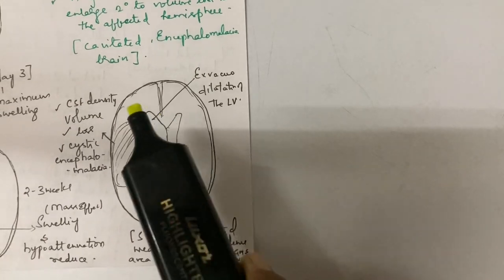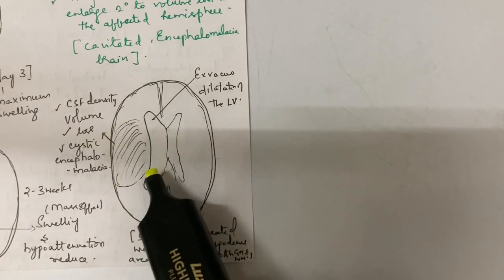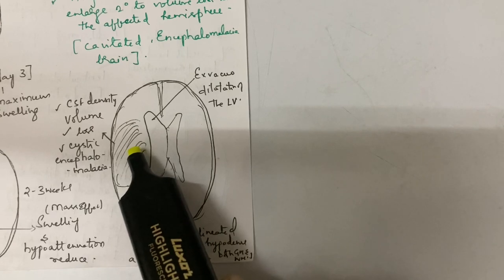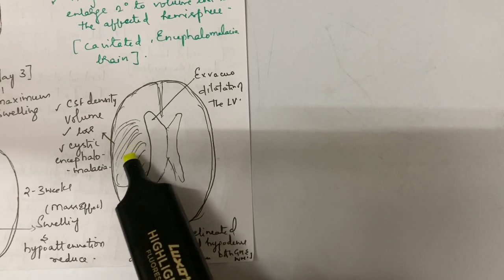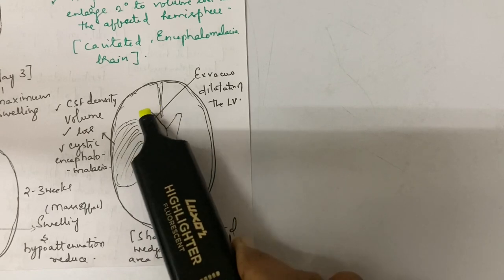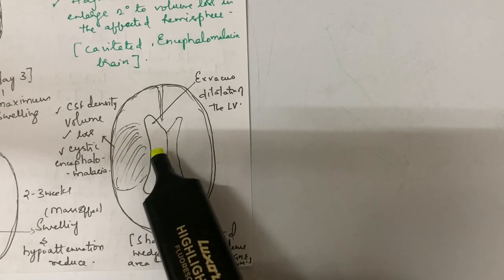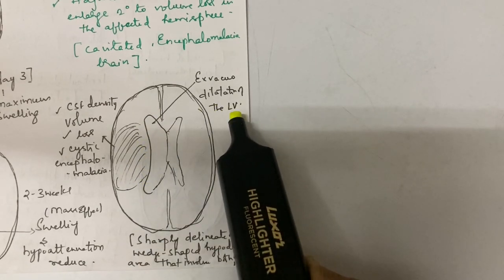Here is the infarct area. It is of CSF density with volume loss, cystic encephalomalacia changes, and due to negative mass effect, there is ex vacuo dilatation of the adjacent ventricle.